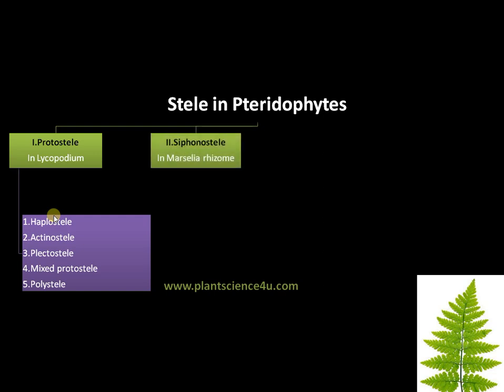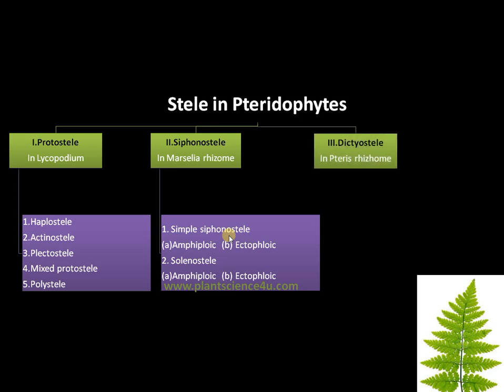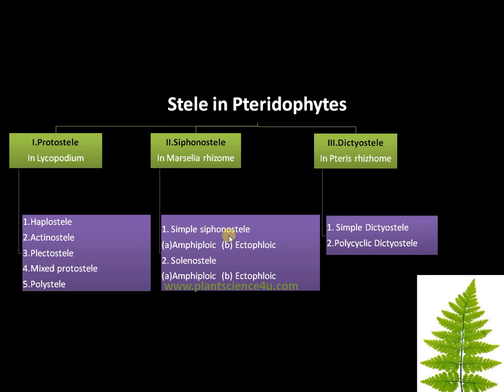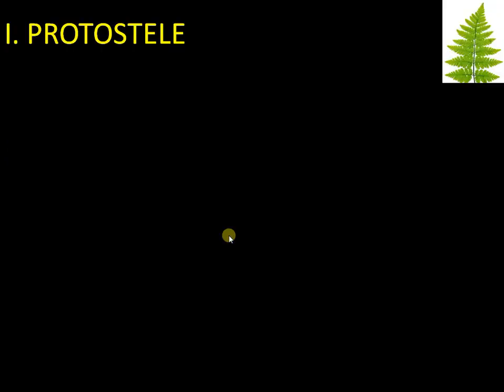The second type of stele is the siphonostele, present in Marsilea rhizome, and it can be simple siphonostele or solanostele. The third type is the dictyostele, present in fern rhizome. It can be simple dictyostele or polycyclic dictyostele. The final one is the eustele, present in Equisetum, where vascular bundles are arranged like higher plants such as dicots and monocots.